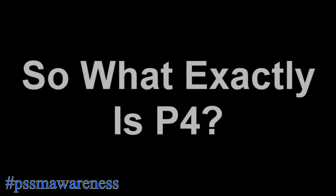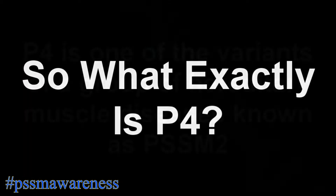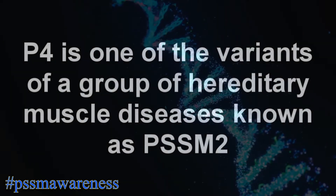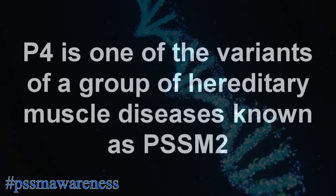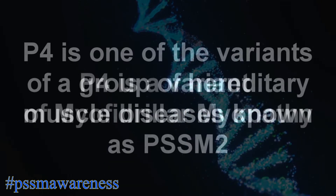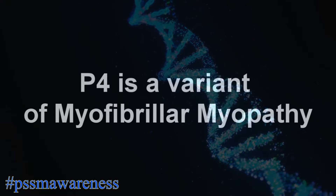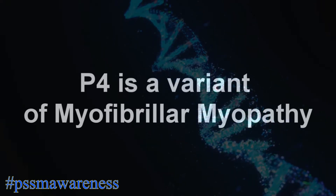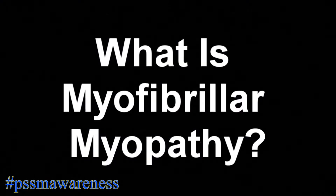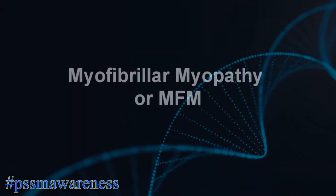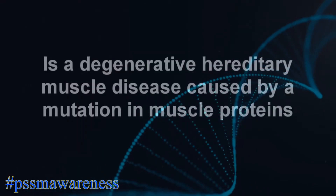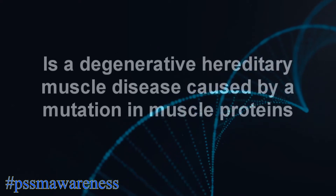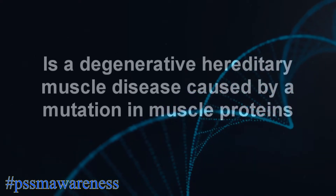So what exactly is P4? P4 is one of the variants of a group of hereditary muscle diseases known as PSSM2. P4 is a variant of myofibrillomyopathy. Myofibrillomyopathy, or MFM, is a degenerative hereditary muscle disease caused by a mutation in muscle proteins.